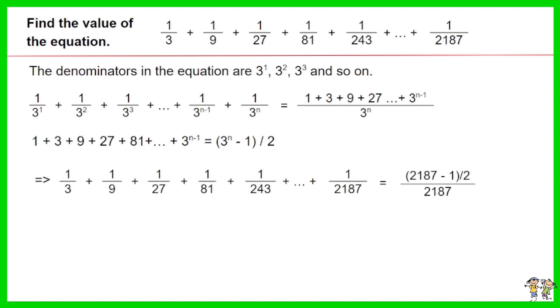As such, the equation in the question is equal to 2187 minus 1, then divided by 2, thereafter divided by 2187.